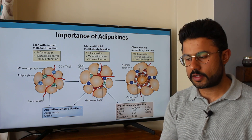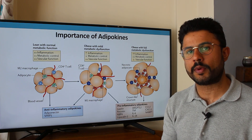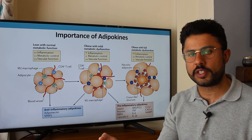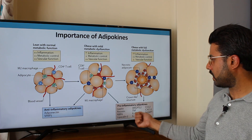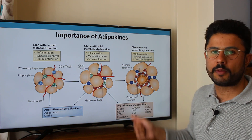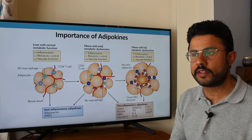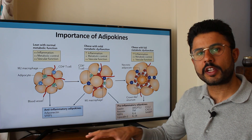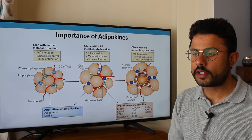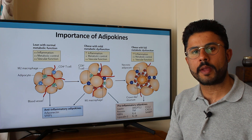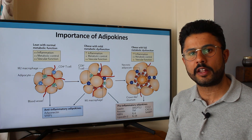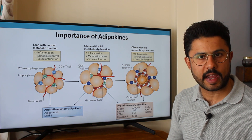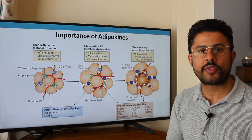That was just an overview of the importance of these proteins released by fat. Obviously, the greater amount of adipose tissue you have in your body, the more likely you are to have these pro-inflammatory adipokines being released and causing harmful effects elsewhere. Stick around for part 4, where we're going to talk about the distribution of body fat in our bodies and how that can impact our health.